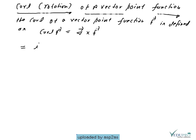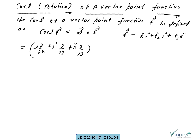Next, we have the topic of curl or rotation of a vector point function. The curl of f is defined as del cross f. Substituting del as i·del/del-x plus j·del/del-y plus k·del/del-z, we take the cross product with f1·i plus f2·j plus f3·k.